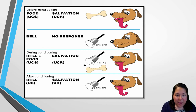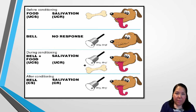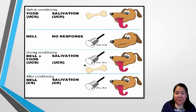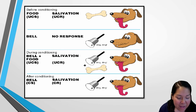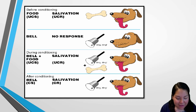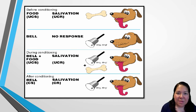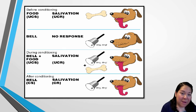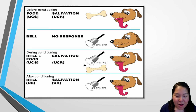After those trials of pairing food and the bell, every time you ring the bell Spike automatically starts to drool, even if you don't present the food. The same thing happens if you even walk towards his leash, because he has learned that when you go for that leash, you're going to take him for a walk — these are simple observations you may have made when getting ready to feed your dog or take him for a walk.